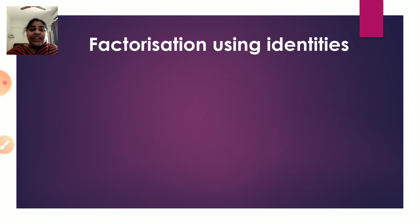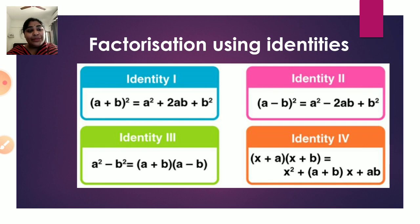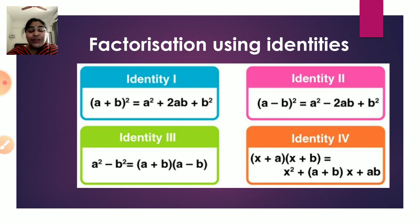Today children we will see factorization of expressions using identities. In the last chapter we learned four identities: (a + b)² = a² + 2ab + b²; (a - b)² = a² - 2ab + b²; a² - b² = (a + b)(a - b); and (x + a)(x + b) = x² + (a + b)x + ab. You have to remember these by heart and use them to factorize algebraic expressions.